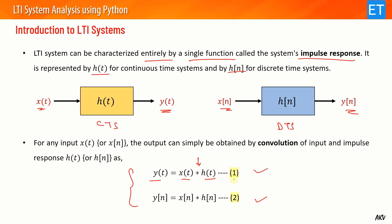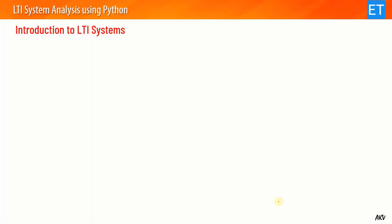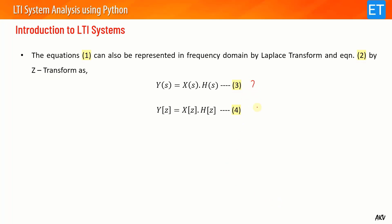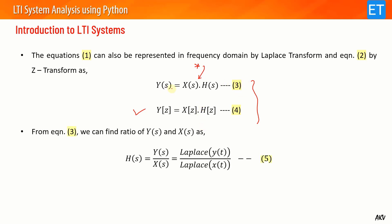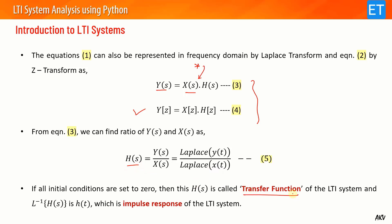The first equation can be converted to the frequency domain with the Laplace transform, and the second discrete equation can be represented in the frequency domain with the Z-transform. By the convolution property, convolution becomes multiplication in the frequency domain. From equation 3, I can find the ratio Y(s) / X(s), where Y(s) is the Laplace transform of y(t) and X(s) is the Laplace transform of x(t). This ratio is known as the transfer function of the system, and its inverse is h(t), the impulse response.